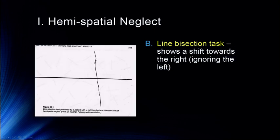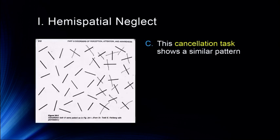Because this left-hand part doesn't exist for them, they've bisected the line over here, as if the line ends at about this point. They're not actually cutting it down the middle — they're cutting it down the middle of what they actually pay attention to. So it shows that shift to the right, ignoring the left. This is a line cancellation task and shows a similar pattern — they're only canceling out those lines on the right-hand side and not paying any attention to those on the left-hand side.